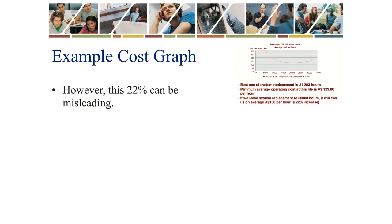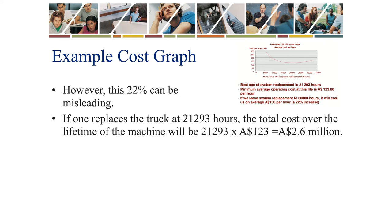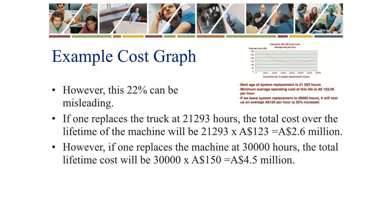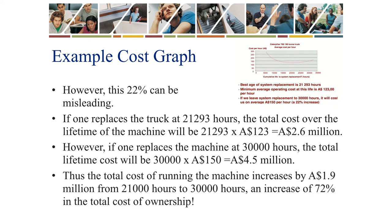If the system replacement is left to 30,000 hours, the lifetime cost per hour will increase by 22%. However, this 22% can be misleading. If one replaces the truck at 21,293 hours, the total cost over the lifetime will be that number multiplied by 123 Australian dollars — which is the optimum — giving 2.6 million Australian dollars. If one replaces the machine at 30,000 hours, the total lifetime cost will be 30,000 times 150 Australian dollars, giving 4.5 million Australian dollars.